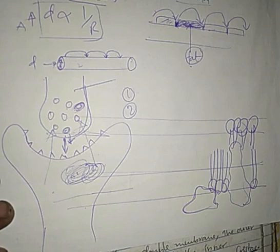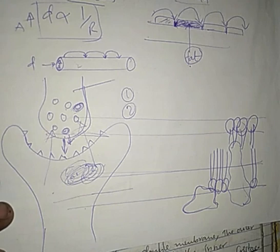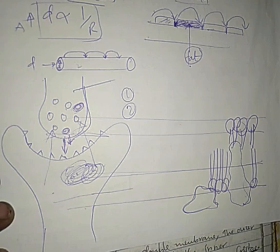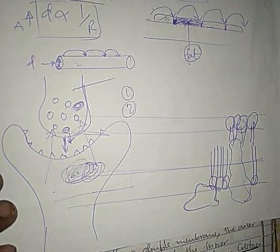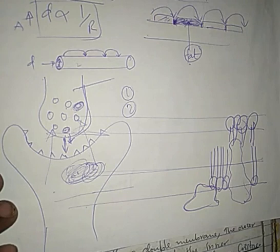Photosynthesis also provides energy that other organisms use. It produces oxygen, reduces carbon dioxide concentration in the atmosphere, and produces sources of fuel and organic materials. These are concepts known from O-level studies, so there is no need to spend too much time on this.